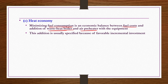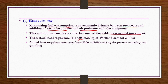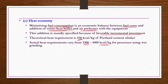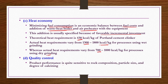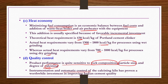Heat economy is achieved by minimizing fuel consumption — an economic balance between fuel cost and addition of waste heat boilers and air preheaters to the kiln. Quality control: product performance is sensitive to rock composition, particle size, and degree of calcining. Instrumentation and automatic control of the calcining kiln has proven a worthwhile investment in improving Indian cement quality.